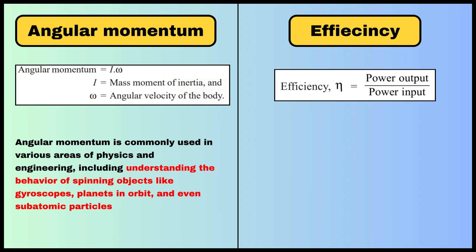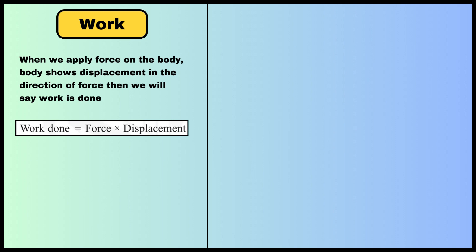The next term is efficiency. Efficiency is the ratio of output divided by input.